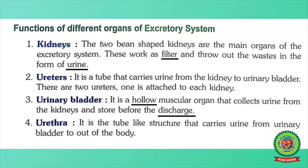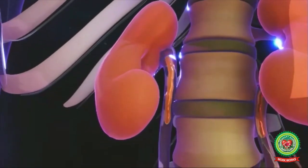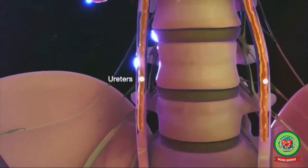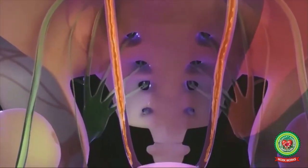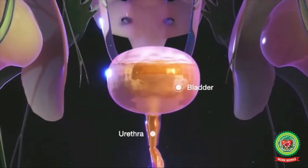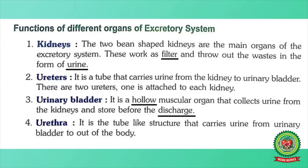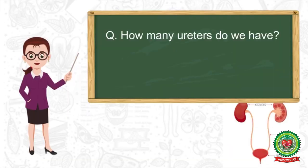The next excretory organs are the ureters. A ureter is a tube that carries urine from the kidney to the urinary bladder. Our ureters act like a connection, helping in the removal of urine from the kidney to the urinary bladder. There are two ureters — one attached to each kidney.